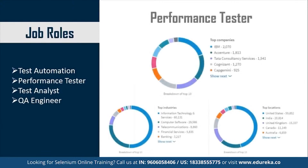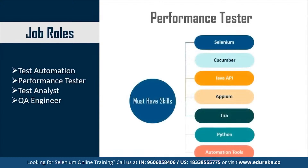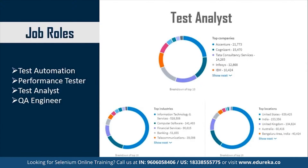Next is the Performance Tester profile. Top companies for this role are IBM, Accenture, TCS, Cognizant, and Capgemini. Top industries include IT Services, Computer Software, Telecommunications, Financial Services, and Banking. The United States is the most preferred location, followed by India, UK, Canada, and Australia. Must-have skills to become a Performance Tester include knowledge of Selenium, Cucumber, Java API, APM, Jira, Python, and proficiency with Automation Tools.